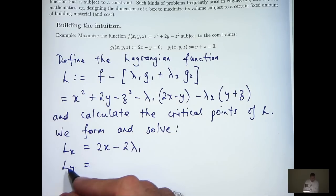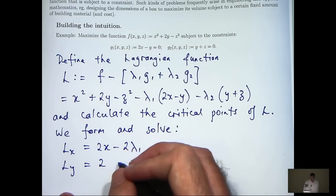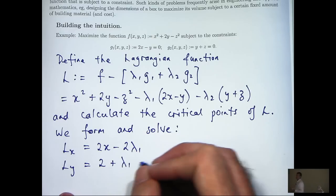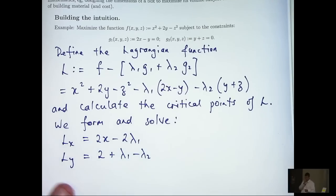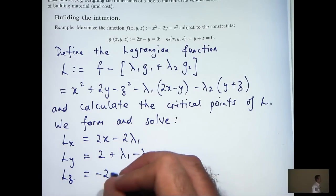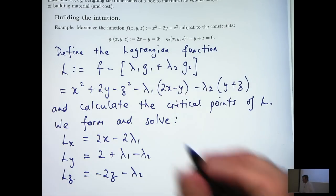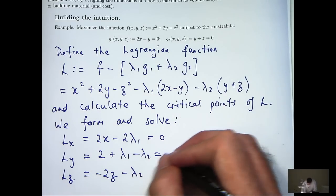We'll get something like this. Similarly, L sub y, partial derivative of L with respect to y. L sub z. So to find the critical points, we set these equal to 0.